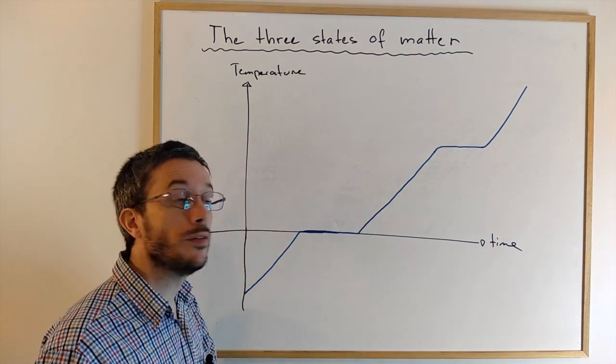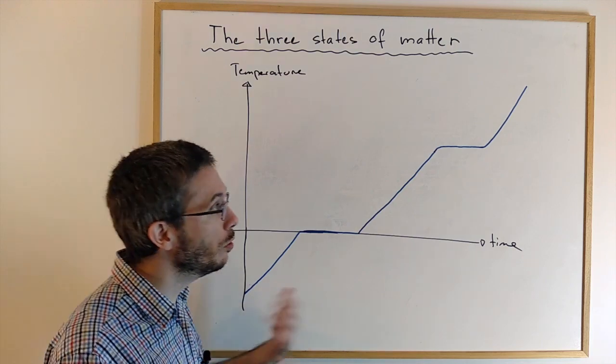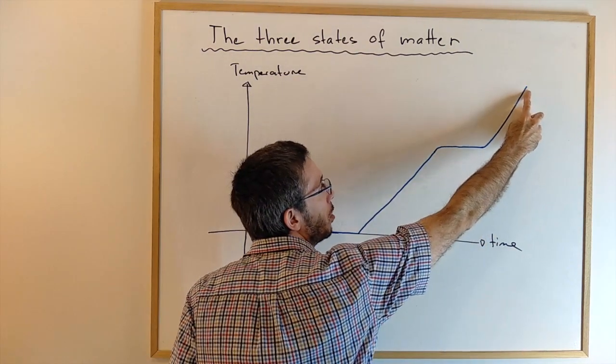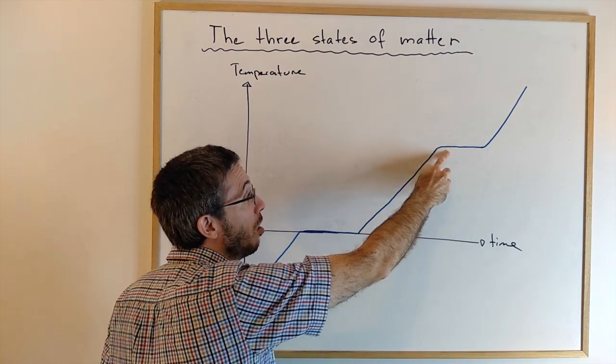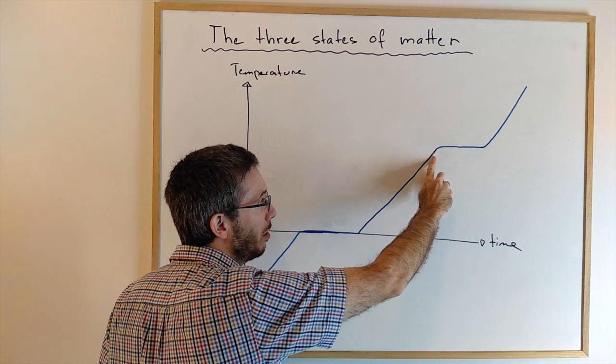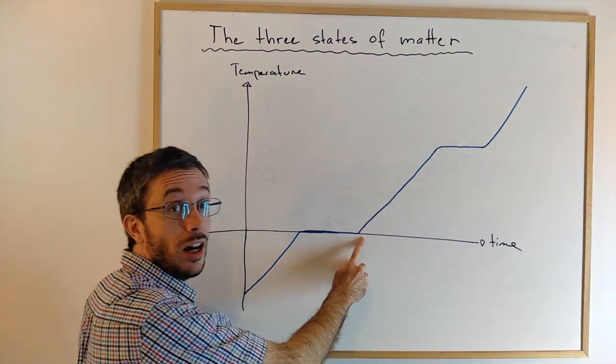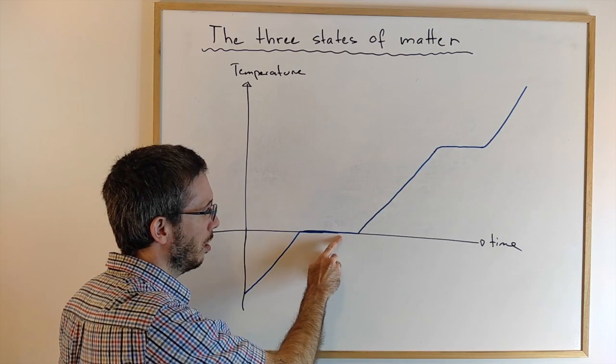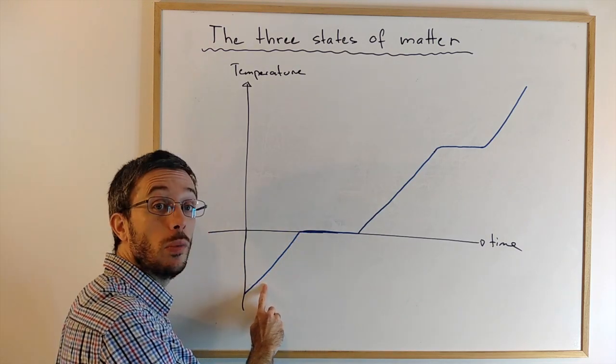If you do it the other way around, if you start with some vapor and you cool it down by removing energy, first of all the vapor gets colder and colder, until some of it becomes liquid. And only once all of the vapor is liquid, then the liquid will start getting colder and colder, until you hit the freezing point. And only once the entire liquid is frozen, then will the ice get colder and go below zero.